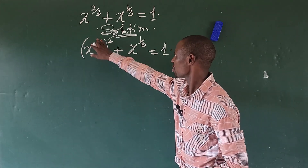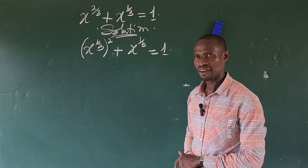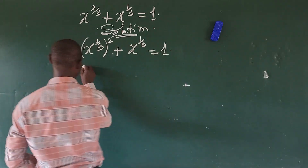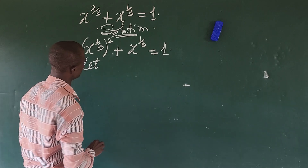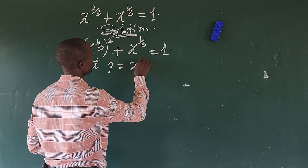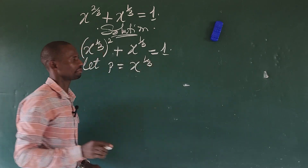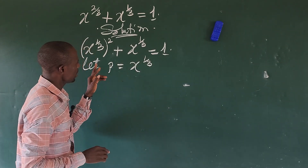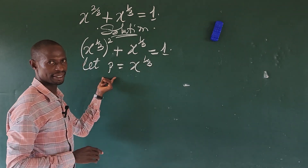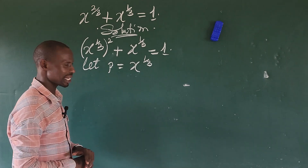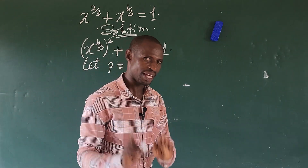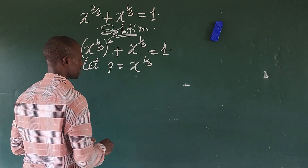The next thing we do is represent x to the power of one-third with a given alphabet, because these are the same. Let p be equal to x to the power of one-third. So wherever we see x to the power of one-third, we put p. We can also make x the subject of the formula, since at the end we're looking for the value of x.